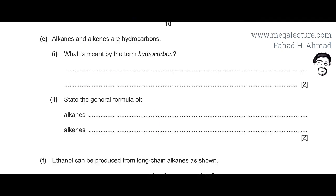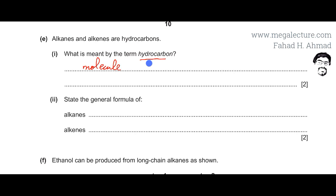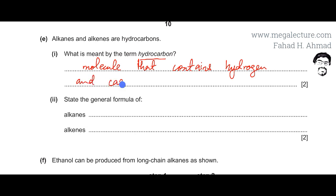Moving to the next part, alkanes and alkenes are hydrocarbons. A hydrocarbon is literally defined by the word itself — it is a molecule that contains hydrogen and carbon only.